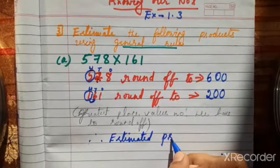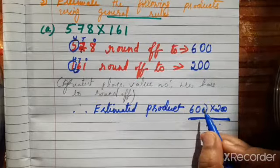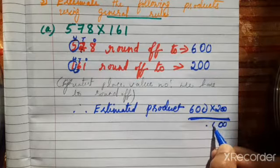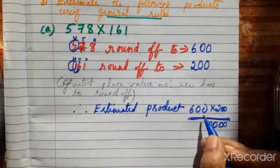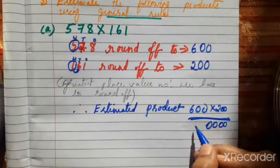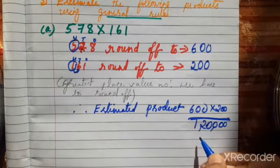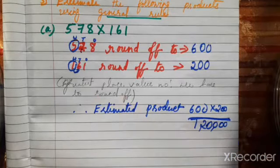Therefore, estimated product: 600 into 200. Since both numbers have trailing zeros, multiply directly. Count the zeros: there are four zeros total. 6 times 2 is 12. So the estimated product is 1,20,000 (one lakh twenty thousand).